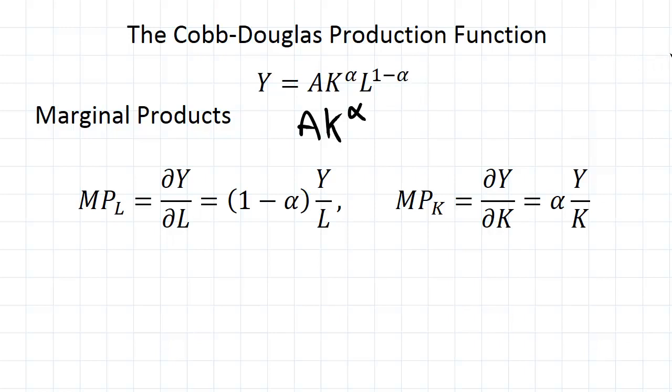So when you differentiate the variable to some power you just take the power up front so we get 1 minus alpha out the front and then you decrease the power by 1. But what I'm going to do is I'm just going to take this original one and then I'm going to say divide by L. Because when you subtract 1 from a power you're basically just dividing by that number. You know if we differentiate x squared...